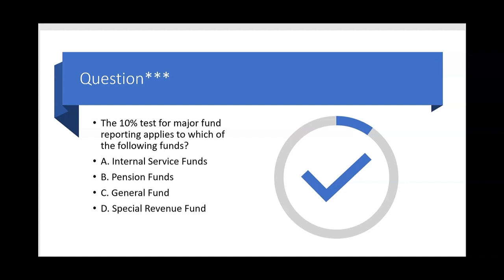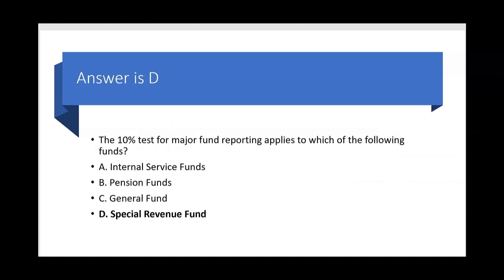C — general fund? No. We wouldn't do a 10% test on a general fund because the general fund is automatically always a major fund. But D — special revenue fund — is a governmental fund. All other governmental funds require a 10% test to determine if they're a major fund. So special revenue fund, letter D, is the correct answer. The 10% test also applies to capital projects funds, debt service funds, and all other basic governmental funds other than the general fund.